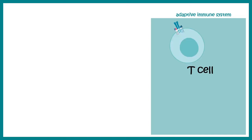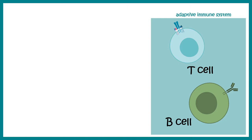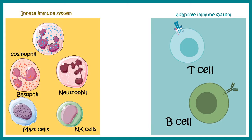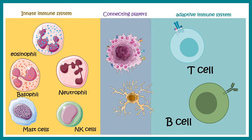The major players of the adaptive immune system are the T cell and the B cell, which develop from lymphoid progenitors present in the bone marrow. The innate immune system components include eosinophils, basophils, neutrophils, NK cells, mast cells, macrophages, and dendritic cells. Importantly, macrophages and dendritic cells can serve as a connection between the innate and adaptive immune responses.